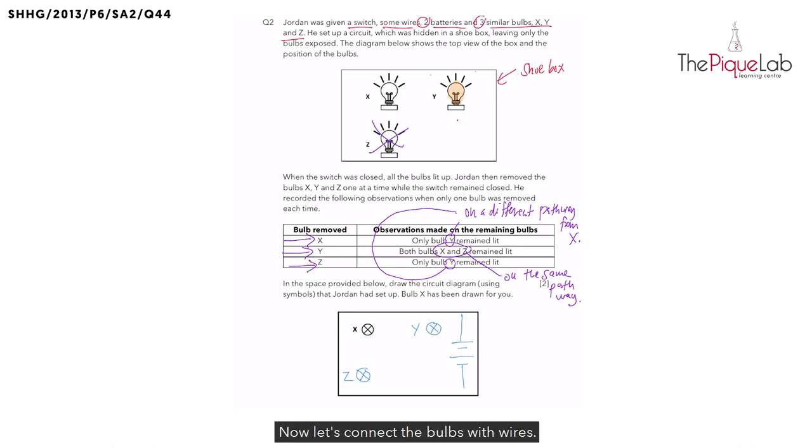Now let's connect the bulbs with wires. Remember, X and Z are on the same pathway. So let's join them with one wire first. And what about bulb Y? Bulb Y was on a different pathway. So I'm going to use a different wire to connect bulb Y. Now let's link up all three bulbs with the battery. And we get our arrangement like this.